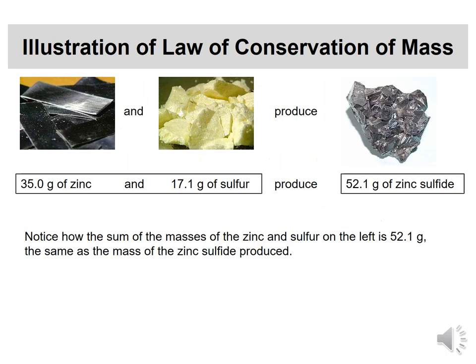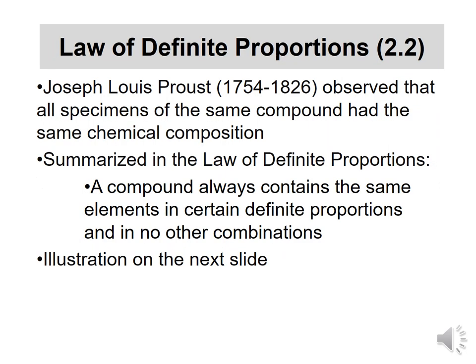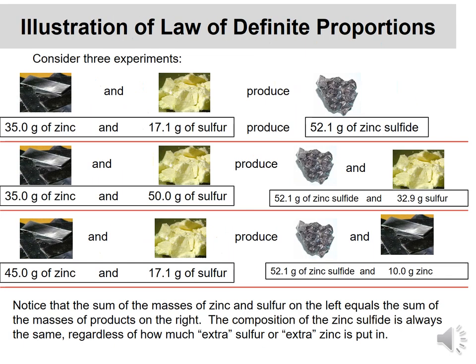Looking at the next slide, zinc sulfide has a composition with zinc and sulfur in a ratio of about 35 to 17.1. Any sample of zinc sulfide will have that same ratio of zinc to sulfur. This summarizes the Law of Definite Proportions: a compound always contains the same elements in certain definite proportions and in no other combination.